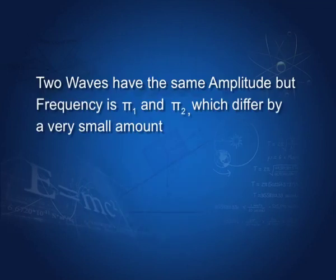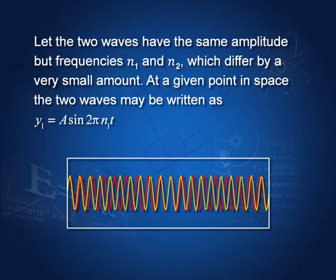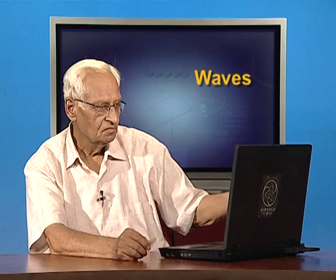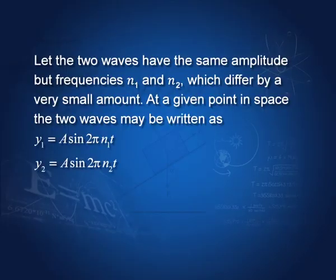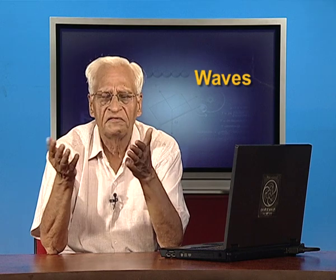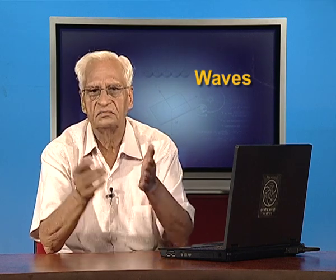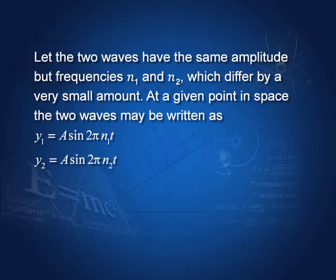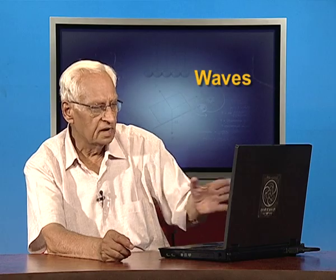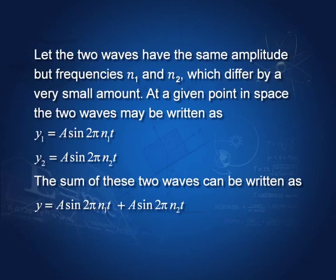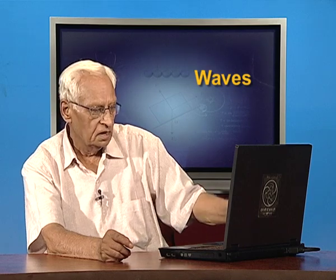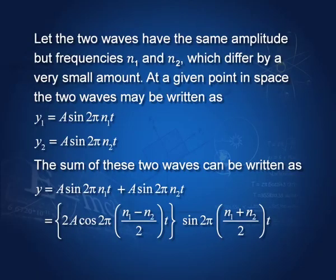Let us see mathematically what happens. We have two waves: y1 = a sin(2π n1 t) and y2 = a sin(2π n2 t), where n1 and n2 differ by a very small amount — say 2, 3, or 4 hertz — so they are nearly equal. The resultant y = a sin(2π n1 t) + a sin(2π n2 t). Using trigonometry, this gives 2a cos(2π (n1 − n2)/2 · t) · sin(2π (n1 + n2)/2 · t).